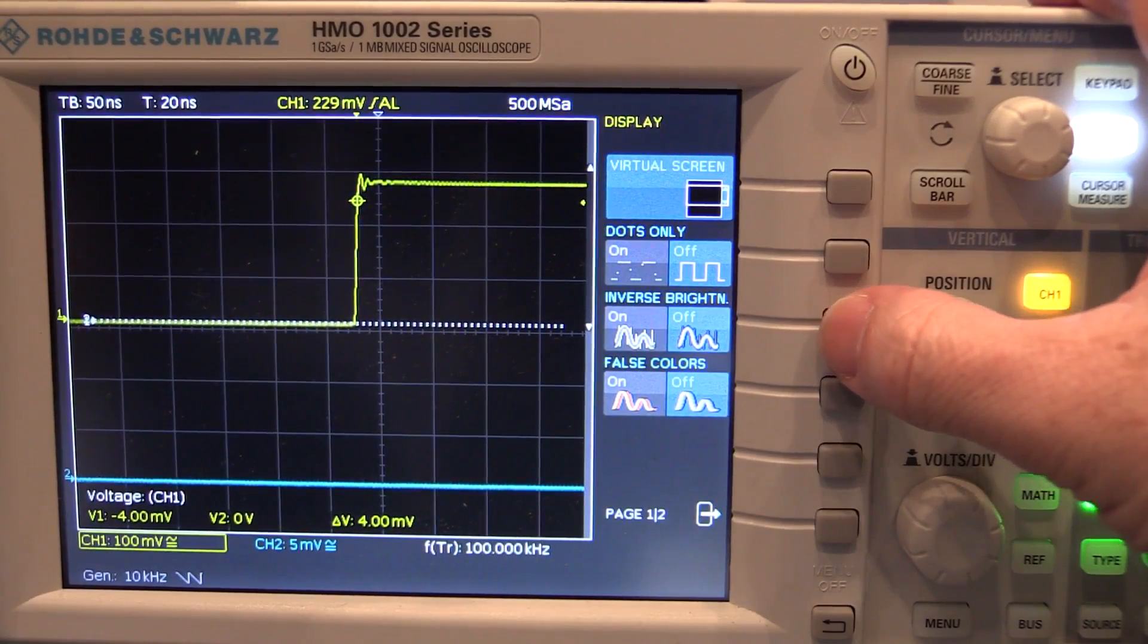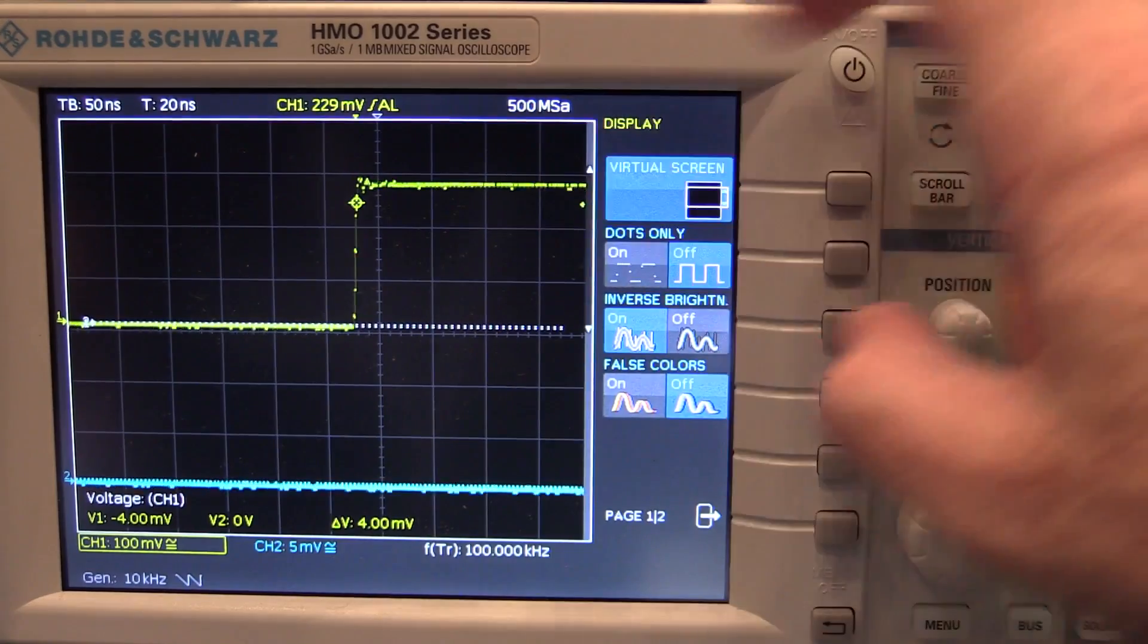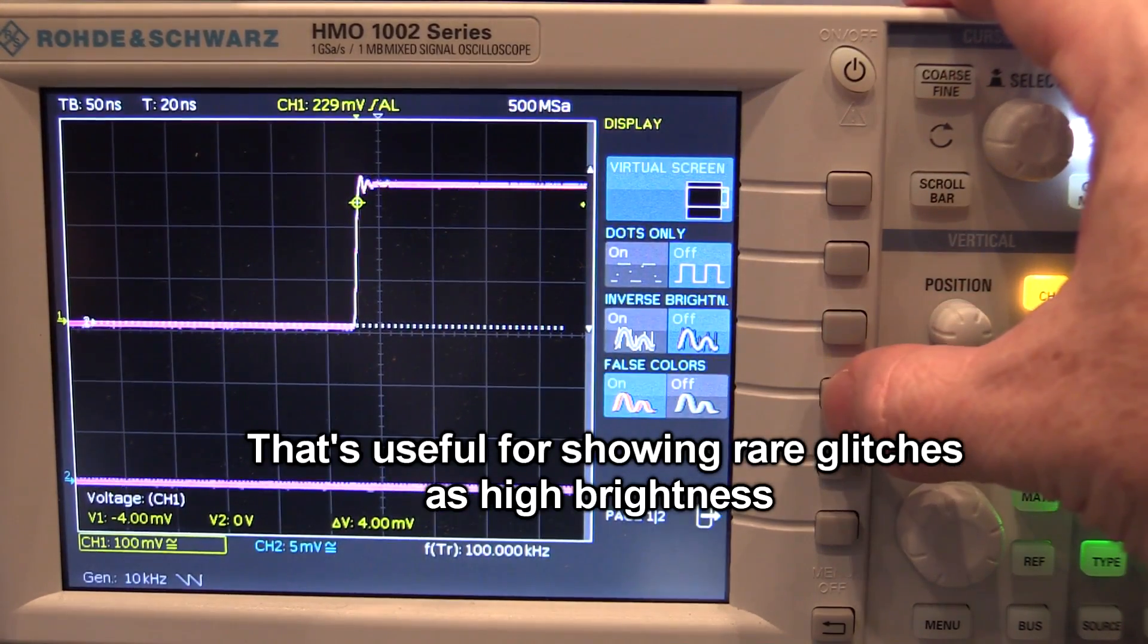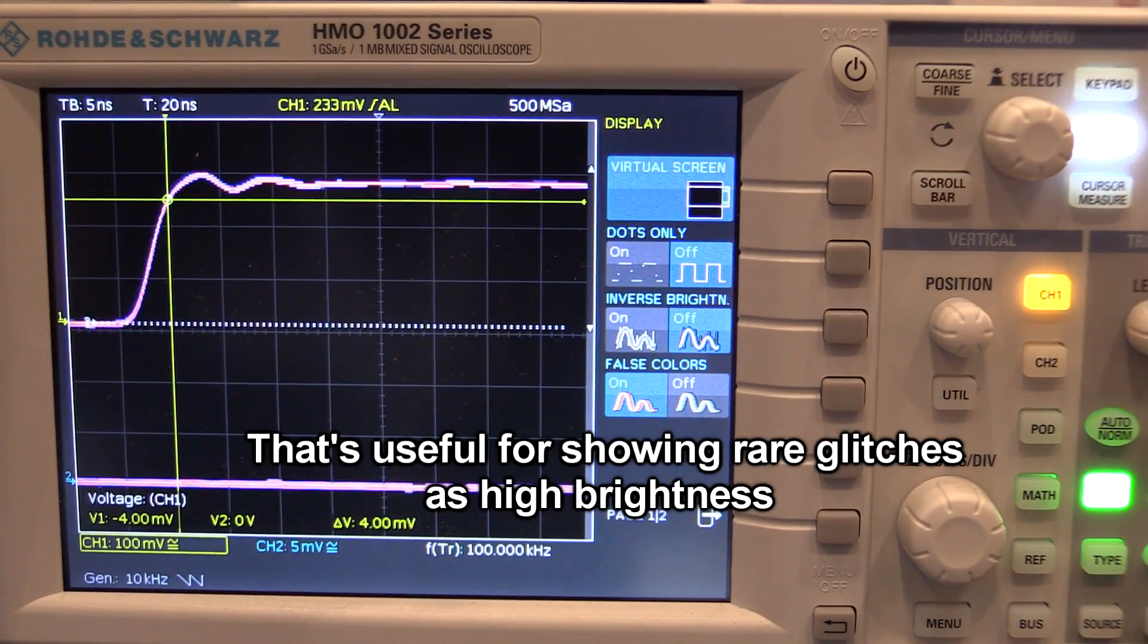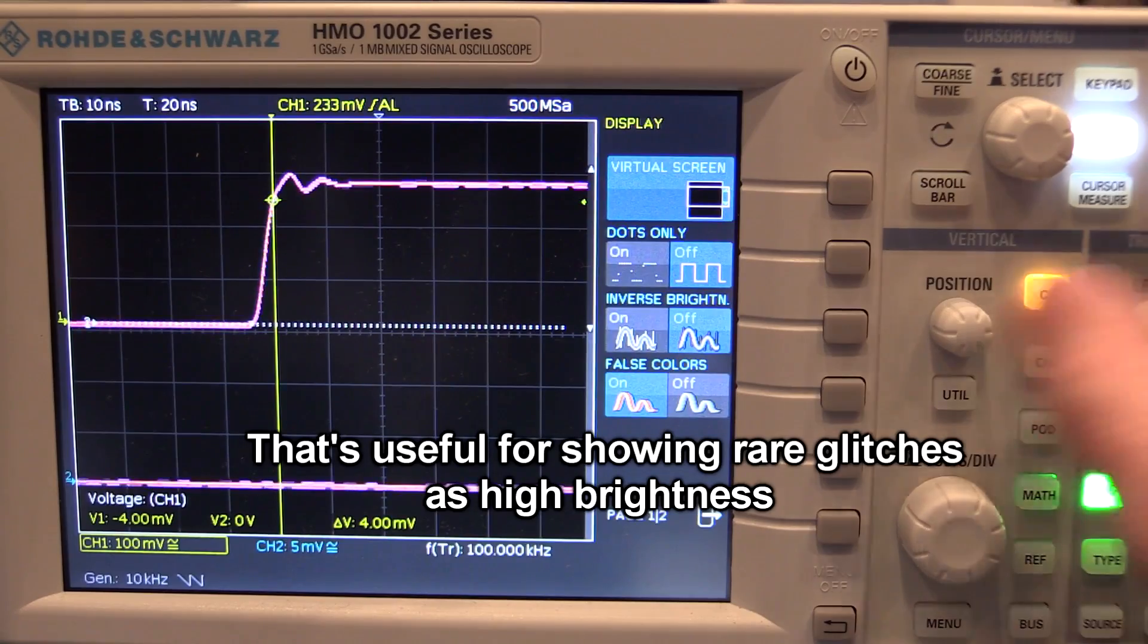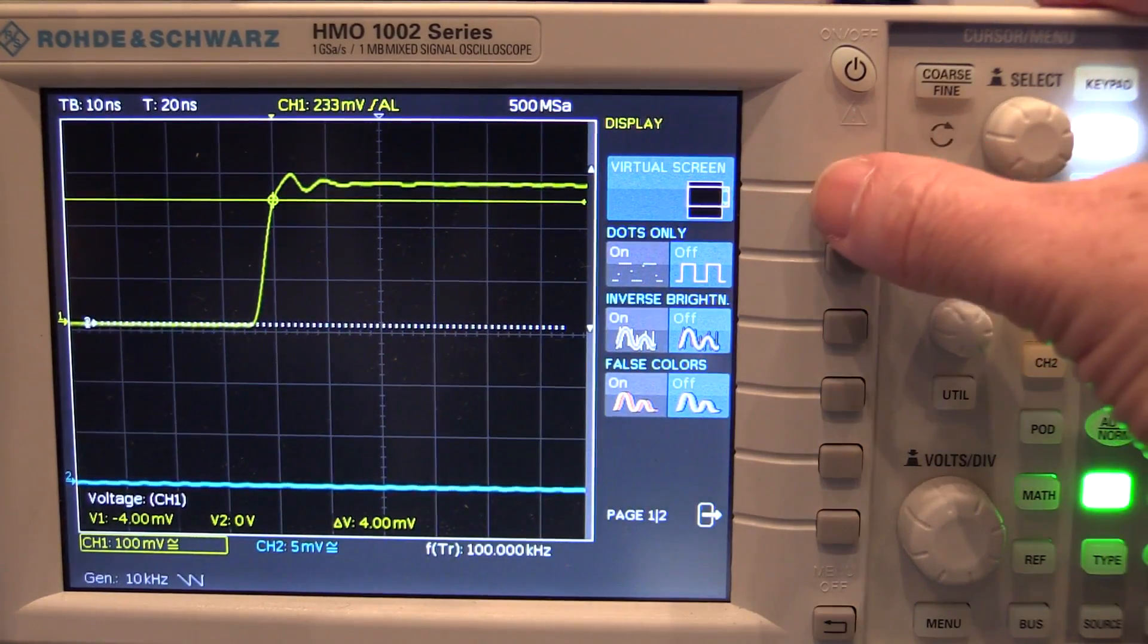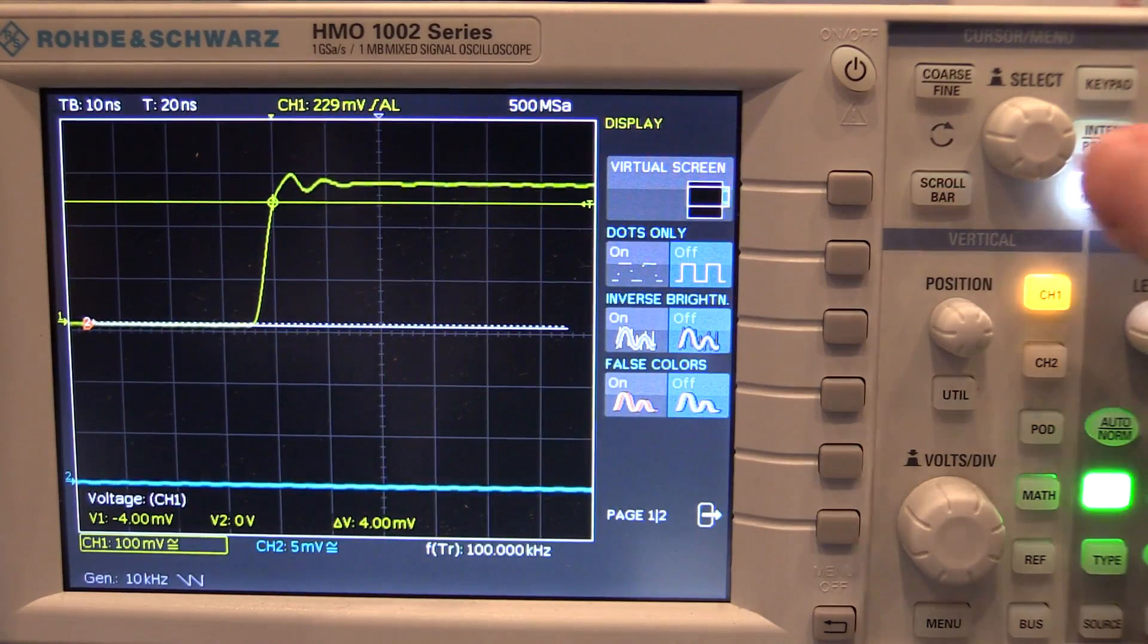And this display option here is interesting. In the display menu you can actually invert the brightness of the variable intensity display. And it does have the intensity color display as well for those color fanboys. But I'm not a personal fan of that. But virtual screen. What is virtual screen?